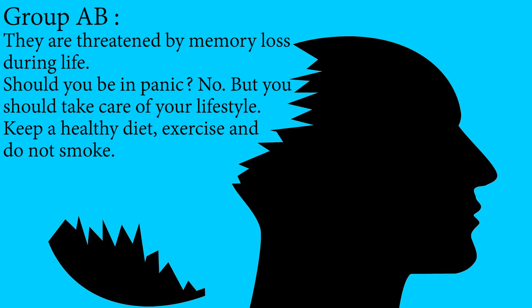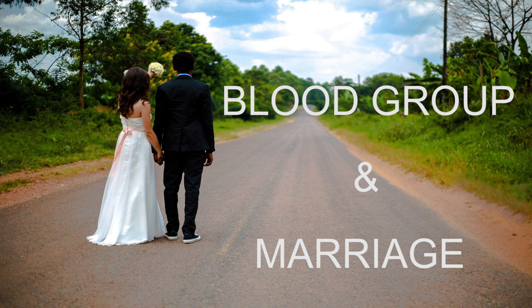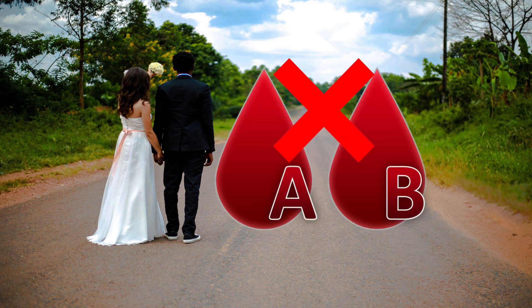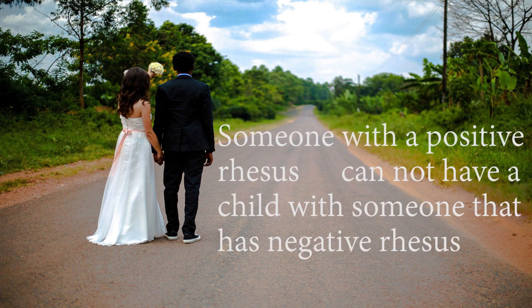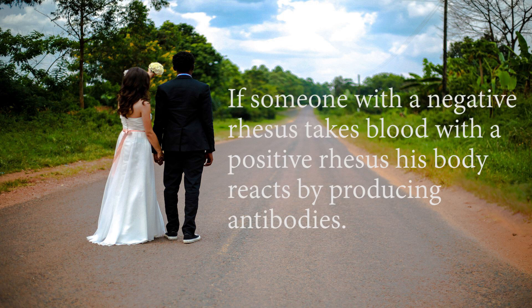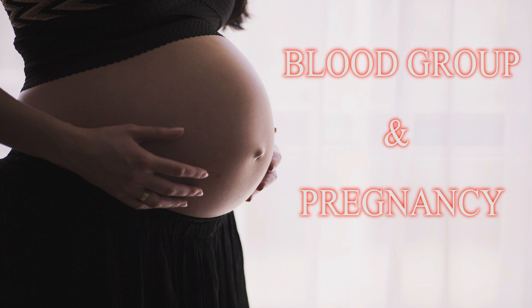Regarding blood group and marriage: before getting pregnant, women must know their blood group because some groups cannot be mixed when bringing a child into life. For example, blood group A must not be mixed with blood group B. Another important element before marriage is the Rhesus factor — someone with positive Rhesus cannot have a child with someone who has negative Rhesus, as the child can suffer from many health problems. The Rhesus positive or negative refers to the presence or absence of a blood substance called the Rhesus factor.